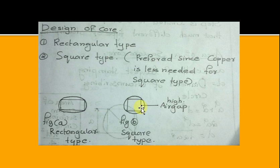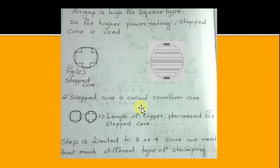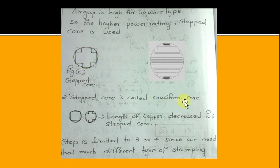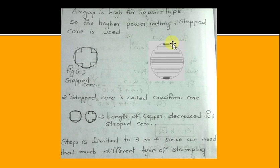For higher power rating, a stepped core is used. A stepped core reduces the air gap and increases power rating. A two-stepped core is called a cruciform core. Steps are limited to three or four, since that many different types of stamping are needed to build the core.